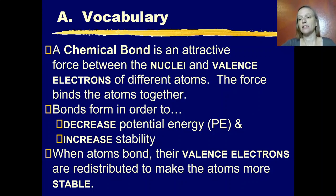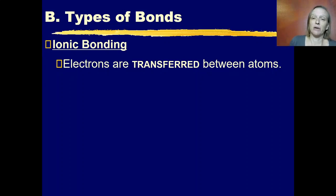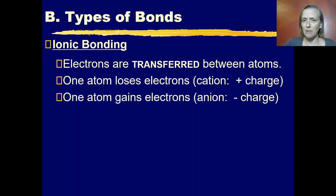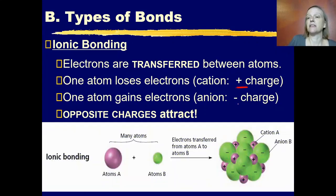There are different kinds of bonds, and atoms achieve this redistribution in different ways. The first kind of bonding we're going to talk about is ionic bonding. Ionic bonding is when electrons are actually transferred from one atom to another. One atom loses electrons and is therefore left with a positive charge — we call that a cation.